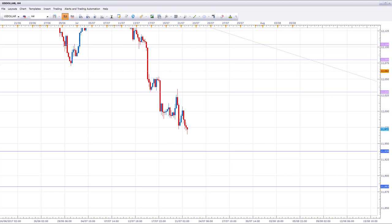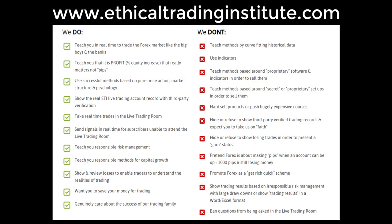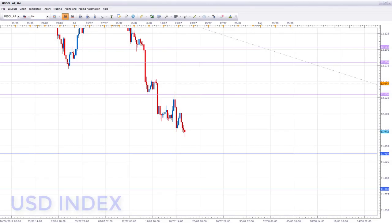Hey traders, it's John Fortune here with this week's weekly forex forecast for the 24th to the 28th of July 2017. Starting with the US dollar index and oil, we're going to run through a number of currency pairs looking at the key levels of support and resistance, and we're also going to outline the targets we're looking for in the coming week as well as possibly the weeks ahead. Check out our website to see how we can get you trading like the banks and institutions using psychology and market structure, not indicators. Let's jump over to the charts.